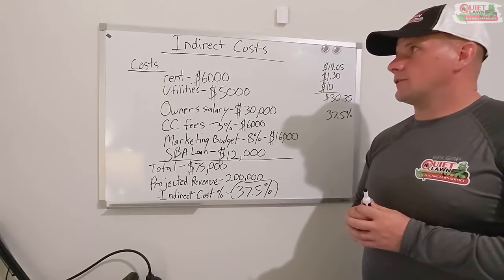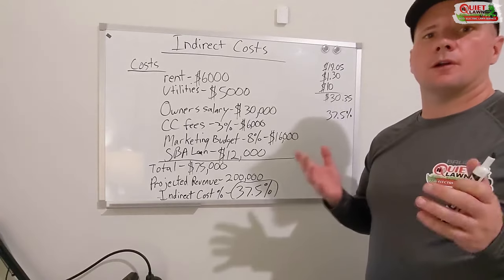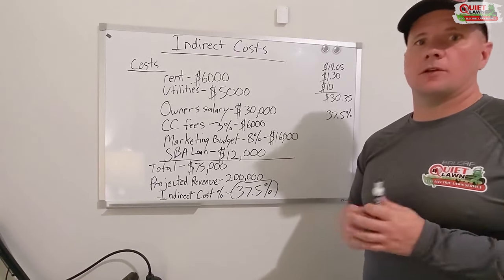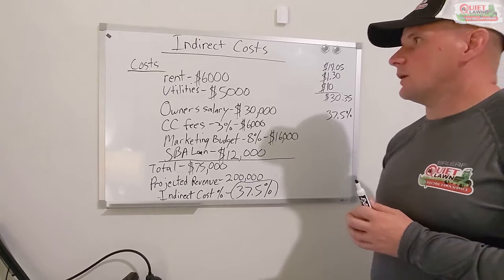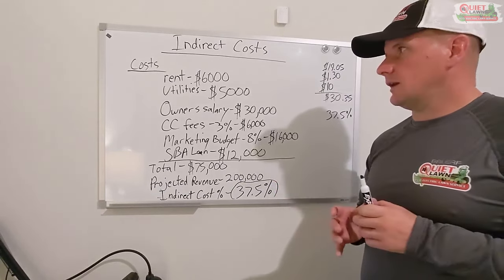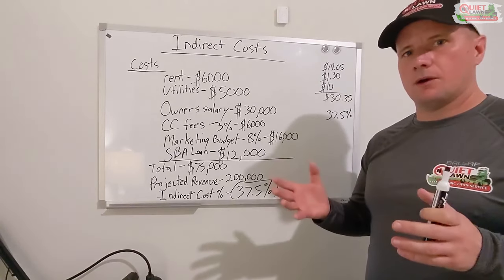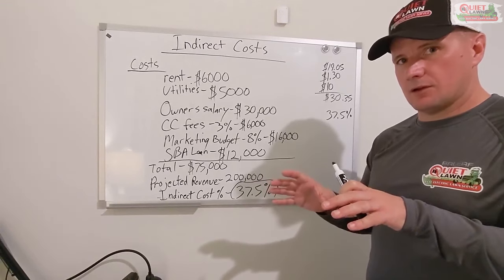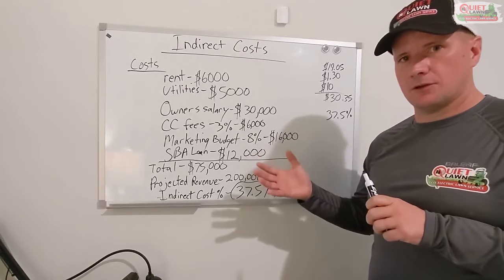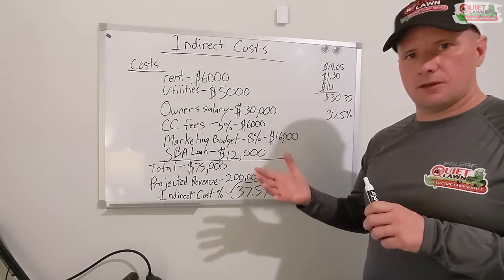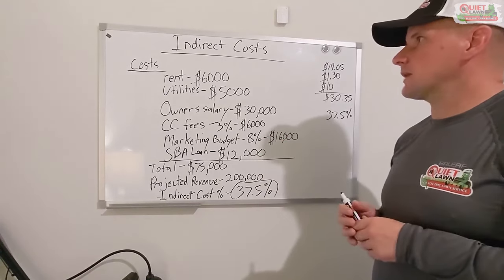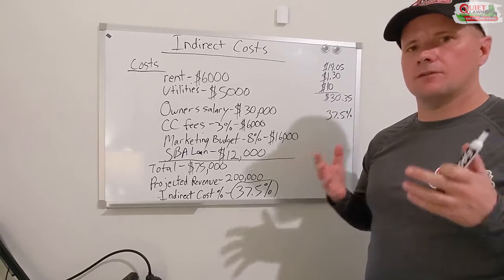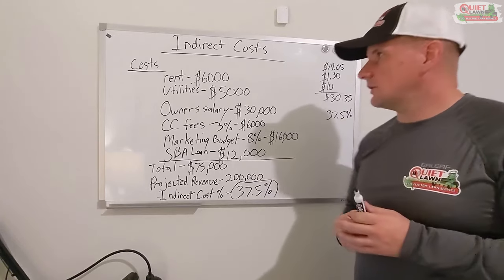So we've calculated our direct cost. Now we need to figure out what our indirect cost or overhead is. This number is going to be a percentage, and you're going to apply it to any service. Whereas the direct costs are going to be different for each service — for example, a mowing service has different equipment and labor costs than a fertilization truck with different equipment — what's going to be the same for all of your services is your overhead percentage, because that's everything else as a percentage.